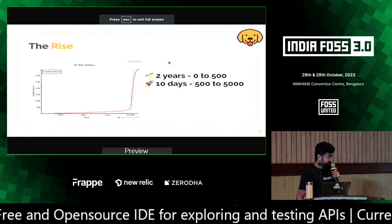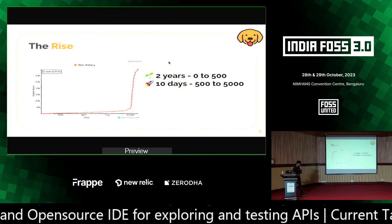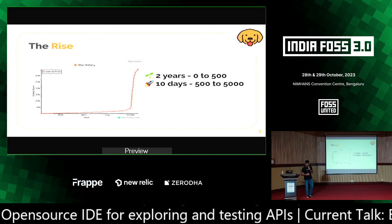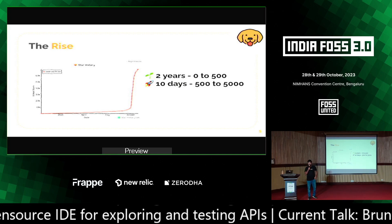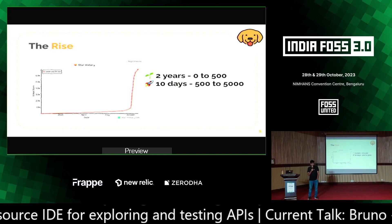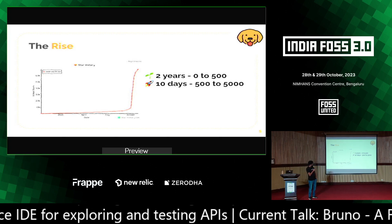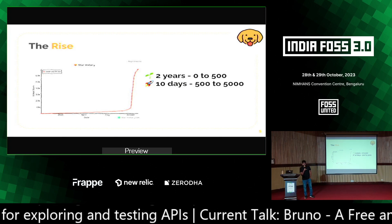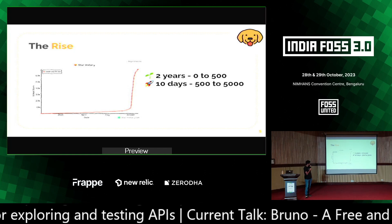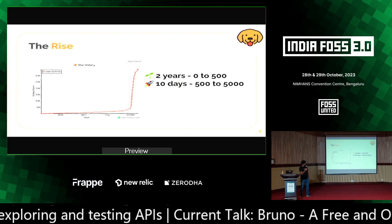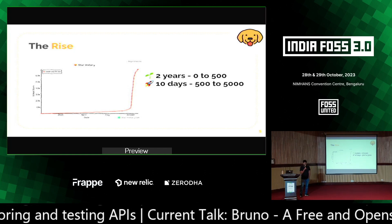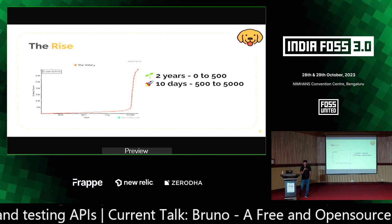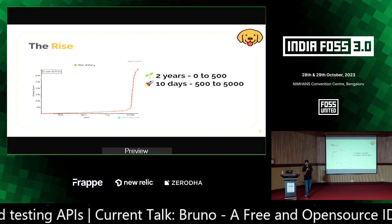I would not be here if something crazy hadn't happened on September 28th. I've been working on this project for two years, and it took us two years to go from 0 to 500 stars. Then in the next ten days, we went from 500 to 5,000. And today we are at 7,000 GitHub stars.